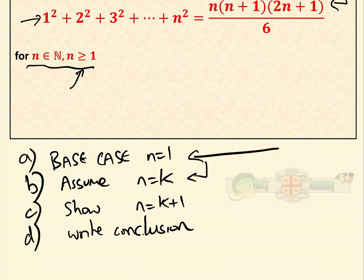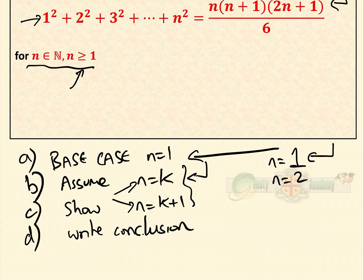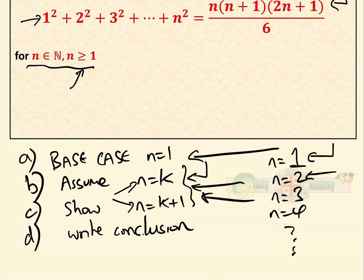The basic idea is: if we've proved it's correct for n equals 1, and we've proved that if it's correct for k then it's correct for k plus 1, then we know it's correct for n equals 2, therefore correct for n equals 3, then n equals 4, and so on ad infinitum. It is a good and valid proof. Some people don't seem to like it because they think we need to know the answer first, but it is perfectly valid and a very common exam question, well worth getting to grips with.